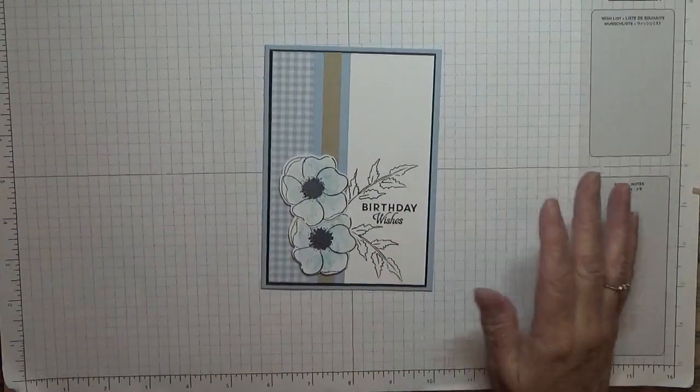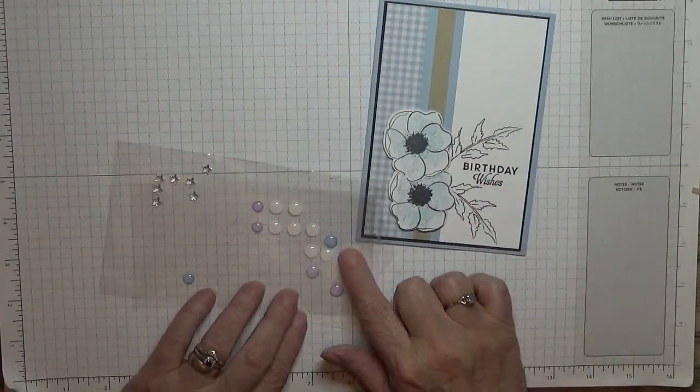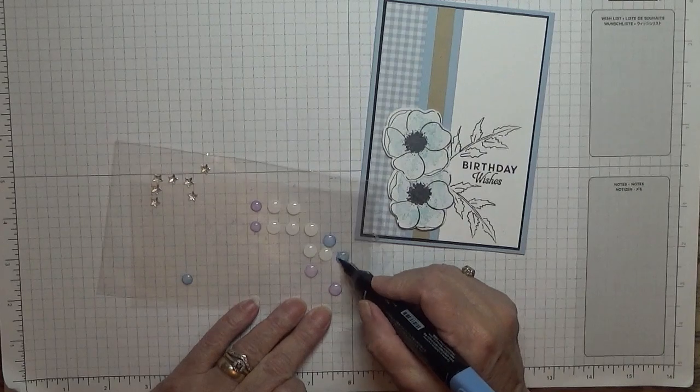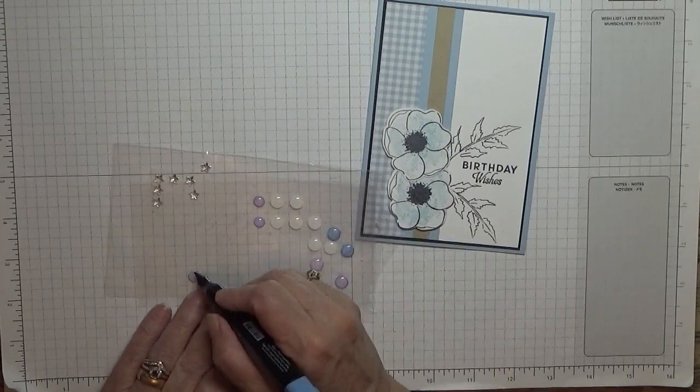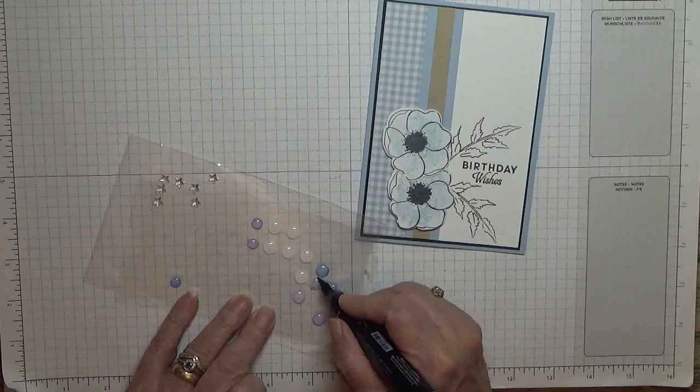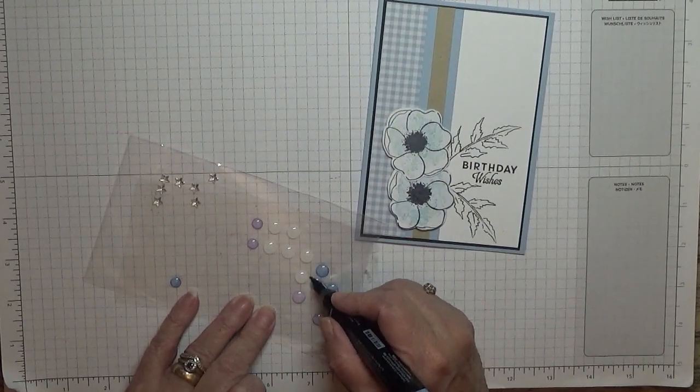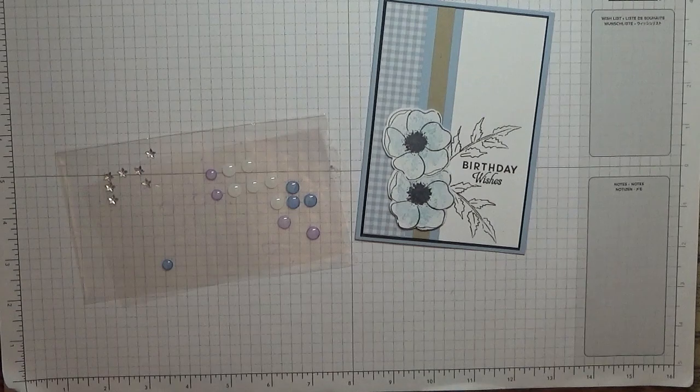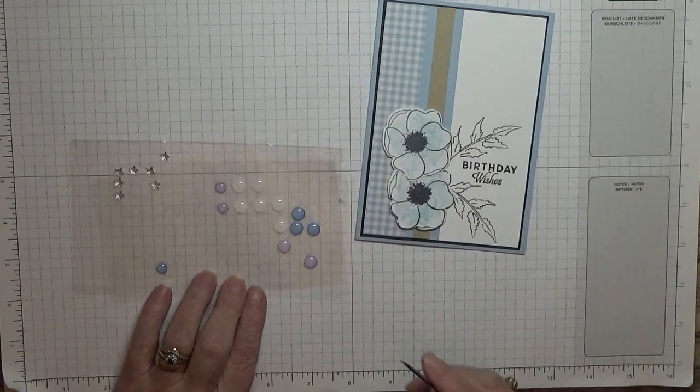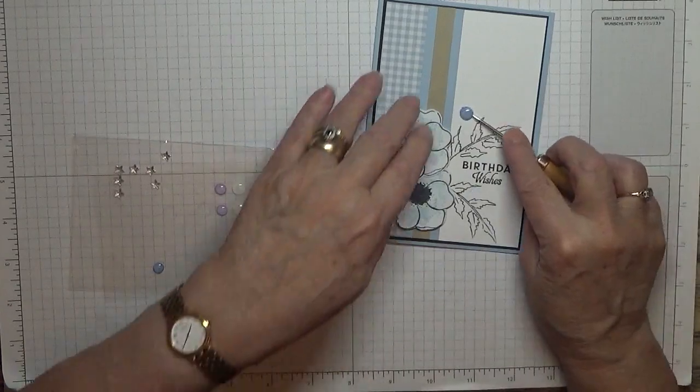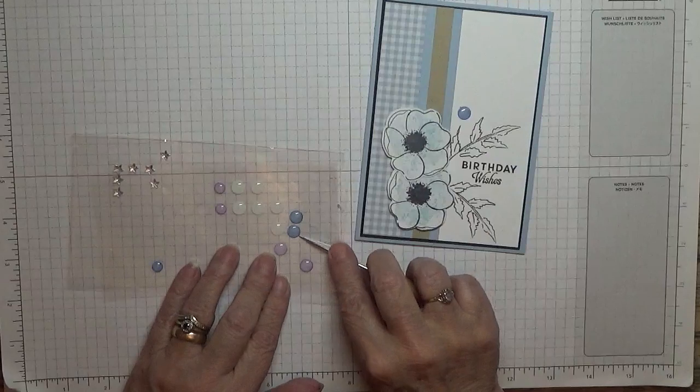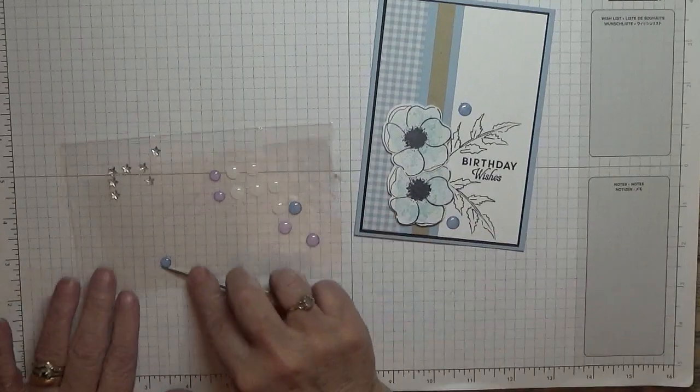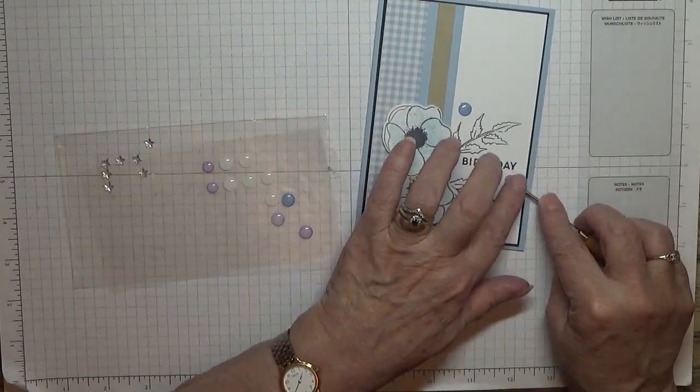Right, then for gems, I've got these old Stampin' Up gems. And I colored them in with my Night of Navy just to give them a bit of color. I don't know what these were called. They are Stampin' Up, but obviously they don't sell them anymore. And I am going to stick one there, one here, and I've got one small one left, which I'm going to stick there.